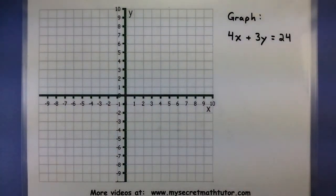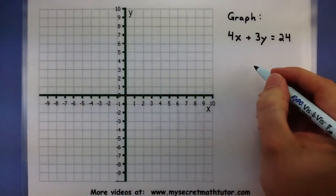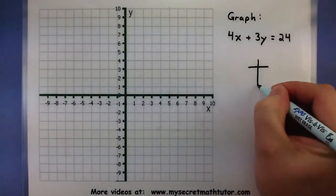I'm going to start off by graphing the line 4x plus 3y is equal to 24. Now the way we make this work is we actually create a small little chart.